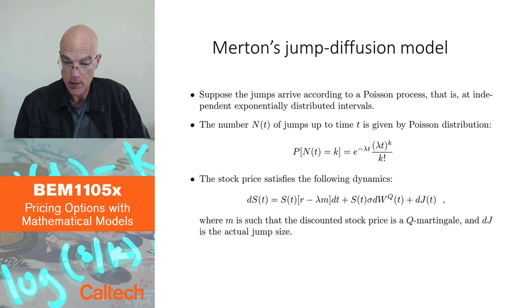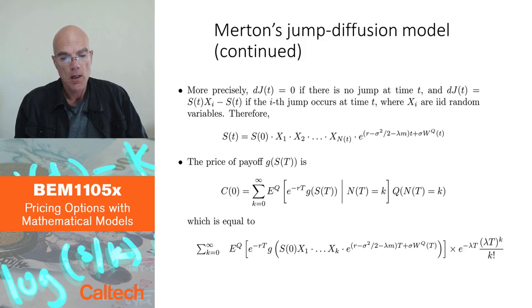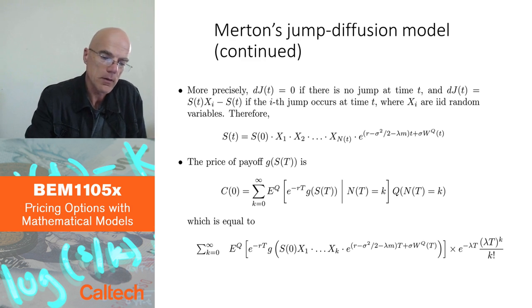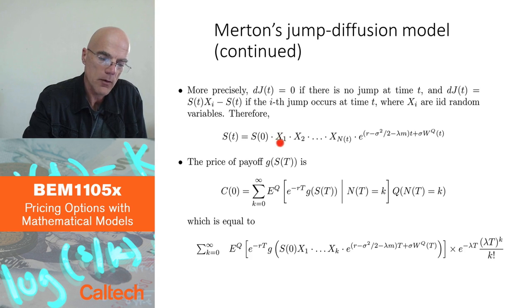That's the model. And more particularly, how we model jumps is by a factor by which the price jumps after a Poisson event. So that's going to be described or modeled by random variables X1, X2, and so on.